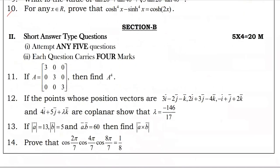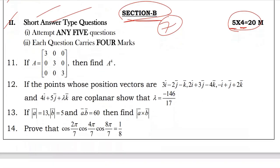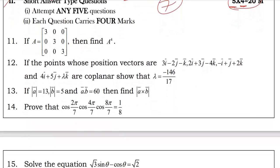Next is Section B: short answers. Total of 7 questions given, choose any 5. Each one carries 4 marks, 20 marks total for this section.